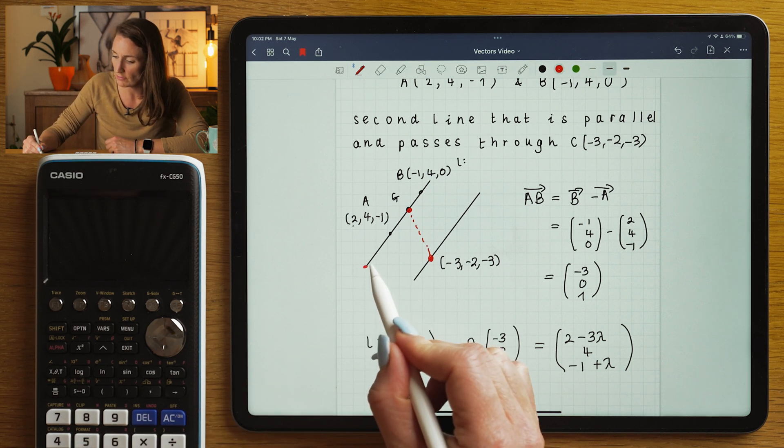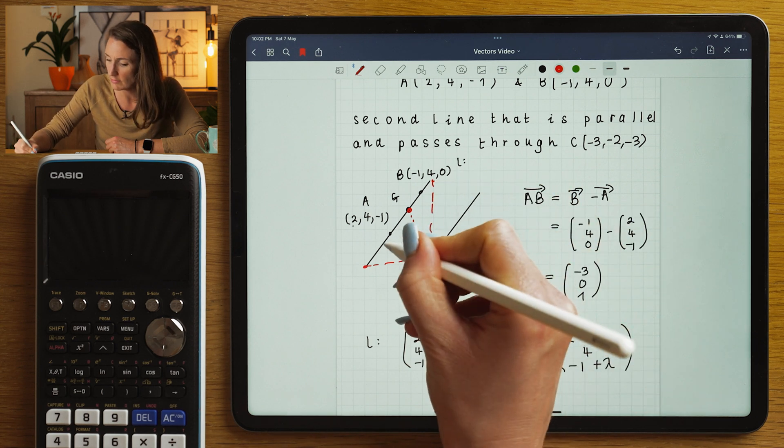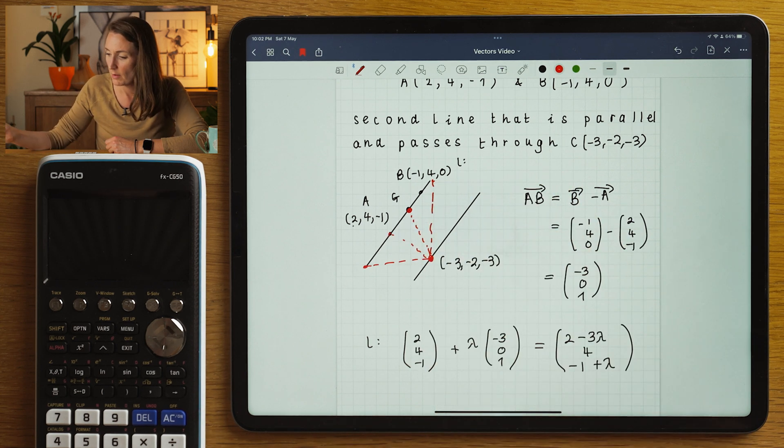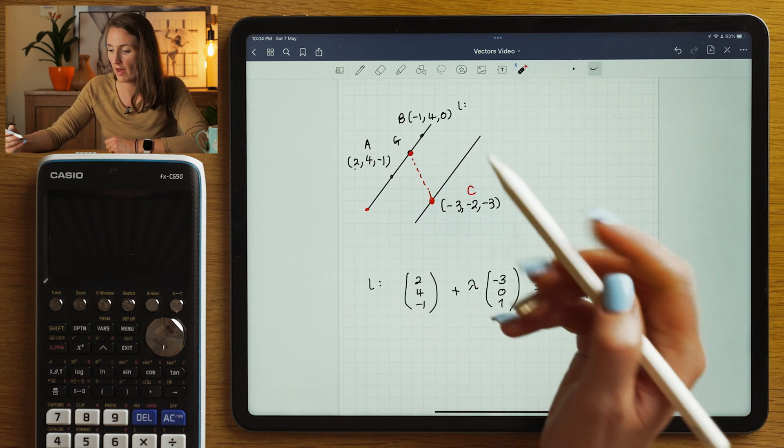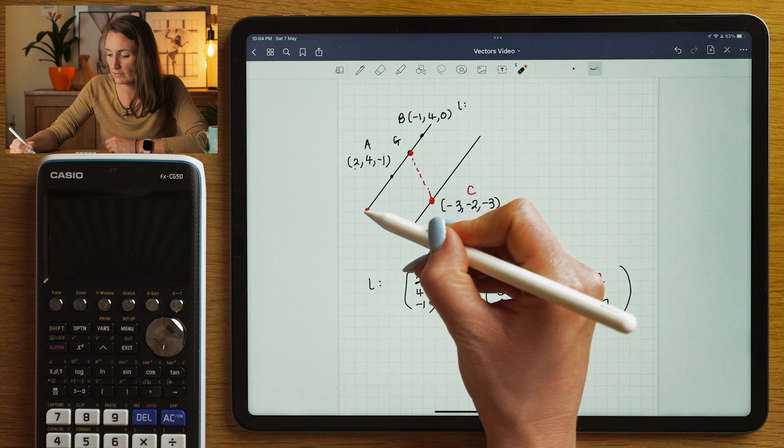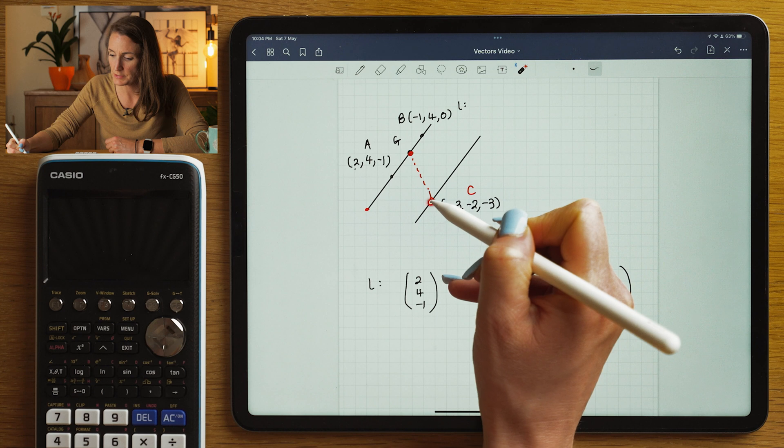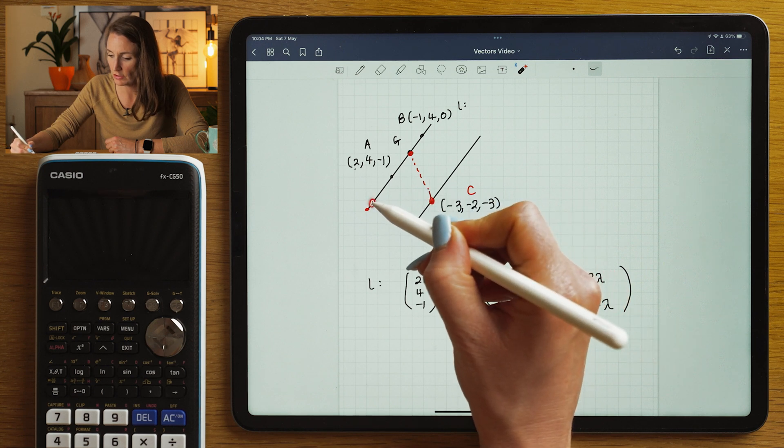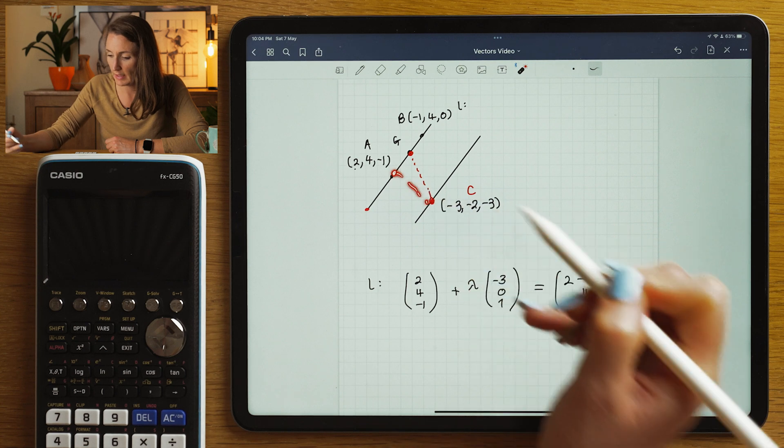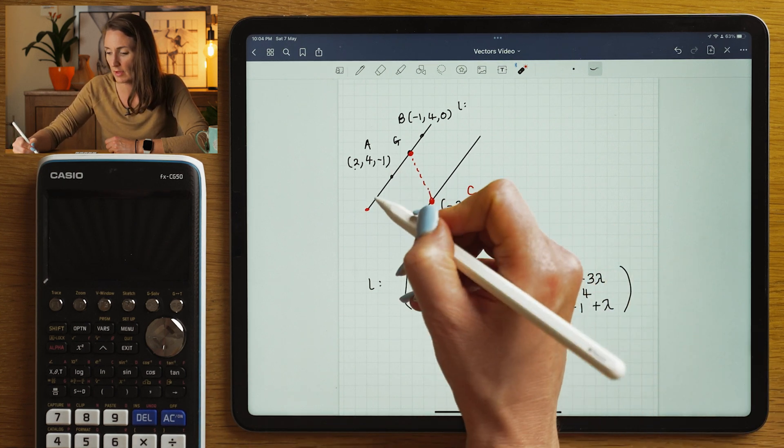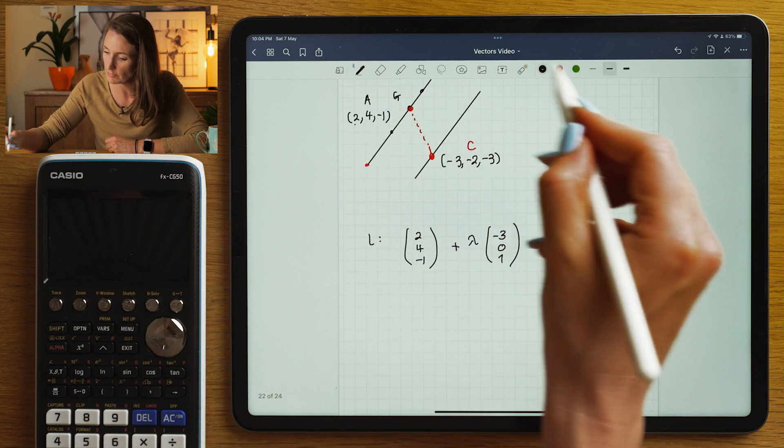Now, for different values of lambda, this general point could be in different places, right? But we're going to get to that later on. So we're going to find a vector that will take us from a general point here to a specific point here. But again, G could be here, G could be here, G could be here. It all depends on the specific value of lambda. Every point on this line will have its own specific lambda.